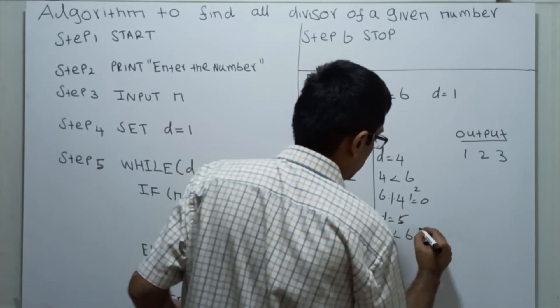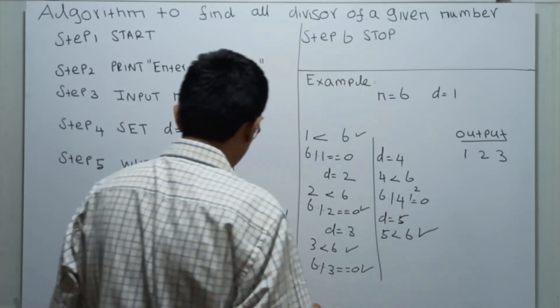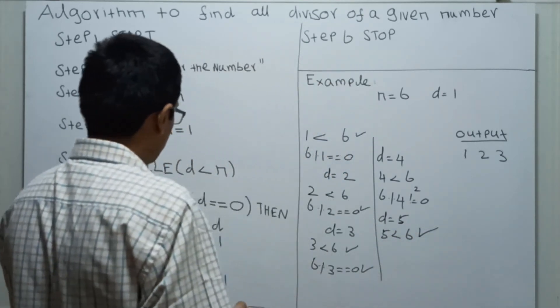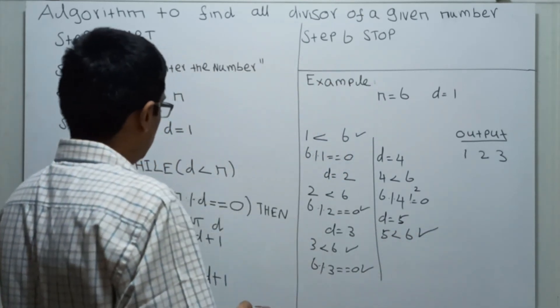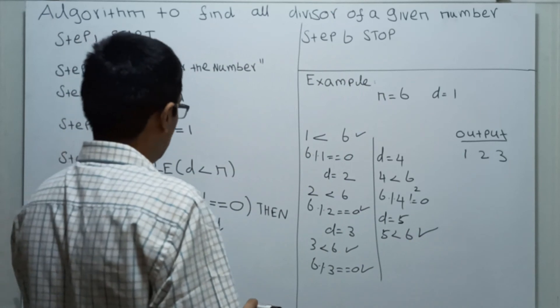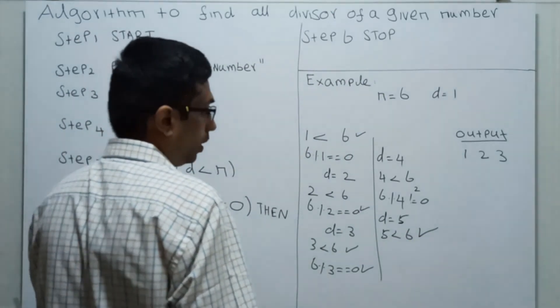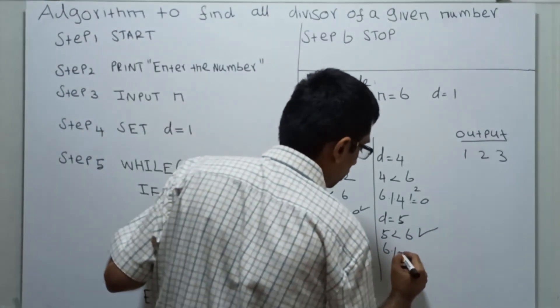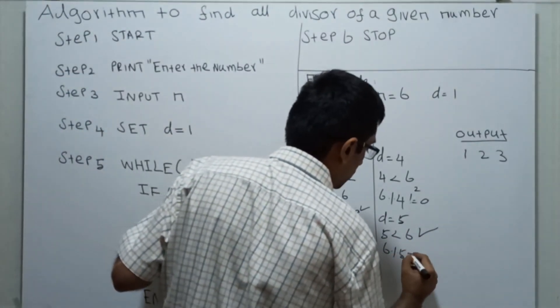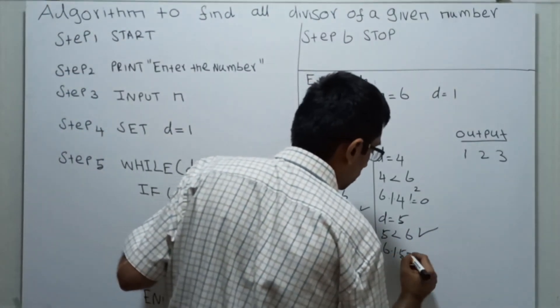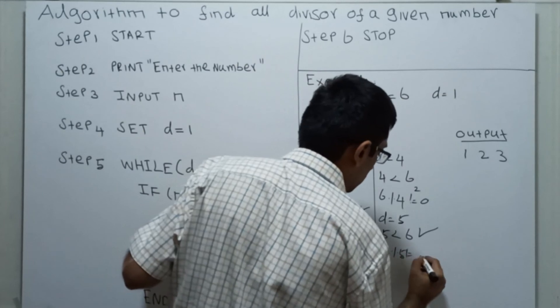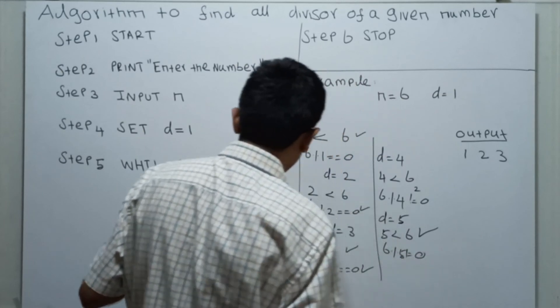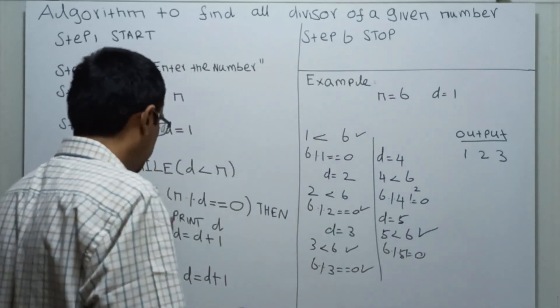5 less than 6, which is true. Then we will check: 6 mod 5 equals 1. So it is not equal to 0 — it won't print.